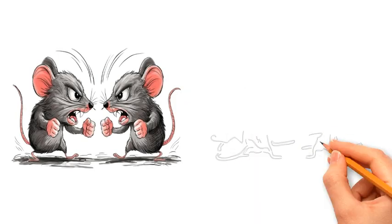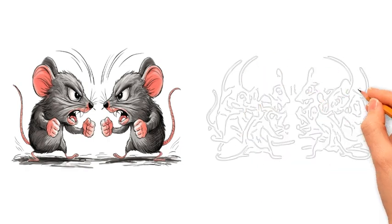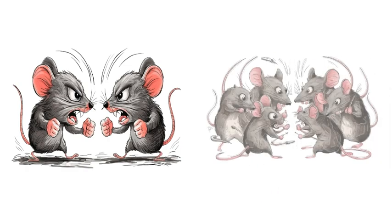With overcrowding came unexpected changes. Mice became increasingly aggressive and territorial. Social bonds weakened, and once normal interactions turned hostile.